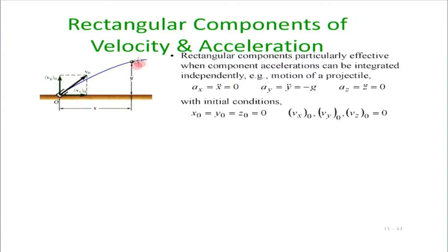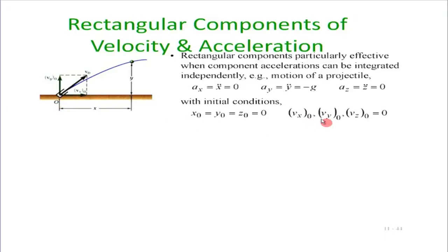Breaking down the acceleration into three components: the acceleration in the x direction is 0 for this problem. Acceleration in the y direction is minus g — minus because our y coordinate is fixed upward and g acts downward. The acceleration in z is 0 since the motion is planar. With initial conditions x₀ = y₀ = 0, and v_x0, v_y0, v_z0 provided as the initial velocities.